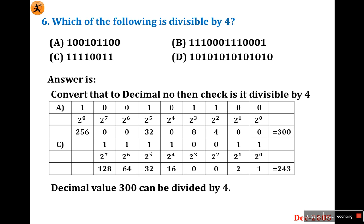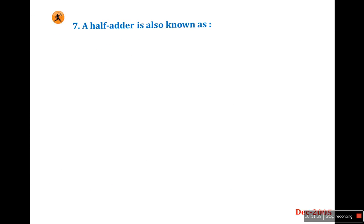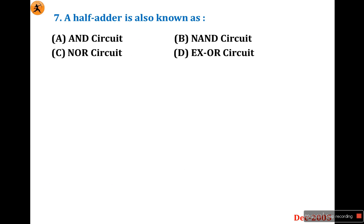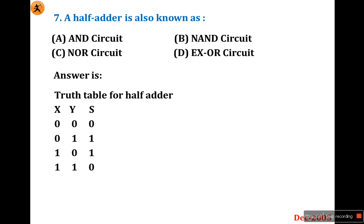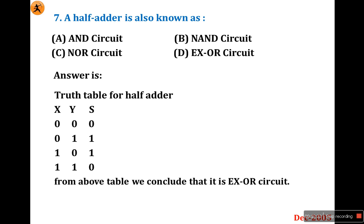Half adder is also known as — looking at the truth table of a half adder: if both inputs are low or both are high, the output is low; if any one input is high, the output is high. We conclude this is an XOR gate circuit. So this is a straightforward question — the answer is option D.